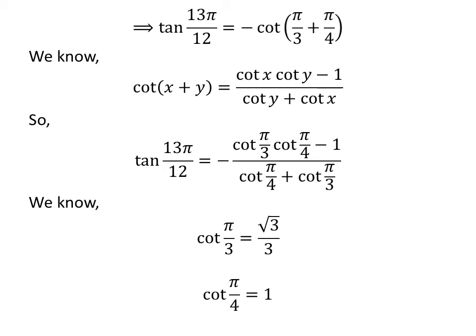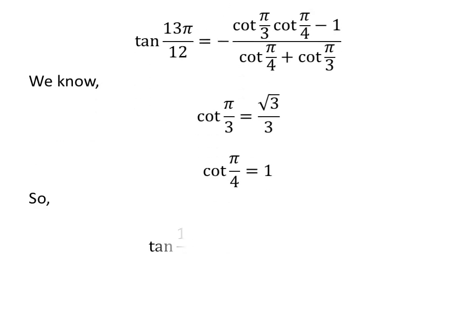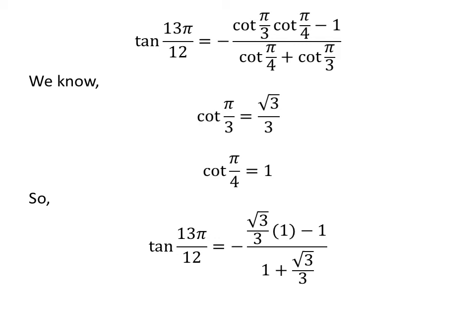As we know, cotangent of pi upon 3 is equal to square root of 3 upon 3, and cotangent of pi upon 4 is equal to 1. So we plug in these values in the above expression and get tangent of 13 times pi upon 12 is equal to minus of square root of 3 upon 3 times 1 minus 1, upon 1 plus square root of 3 upon 3.